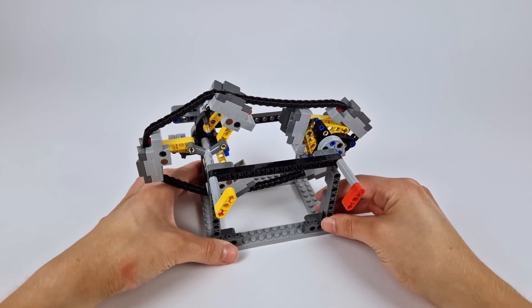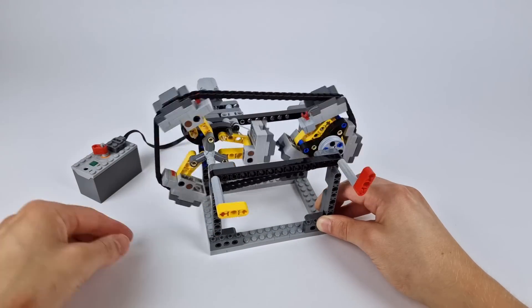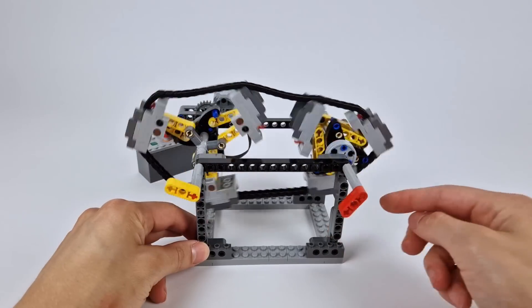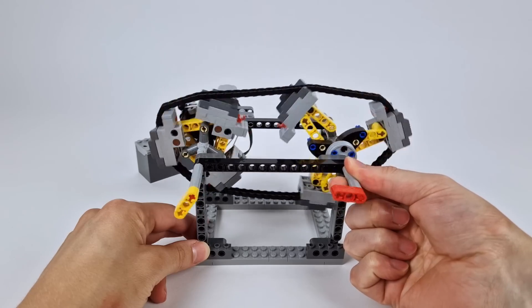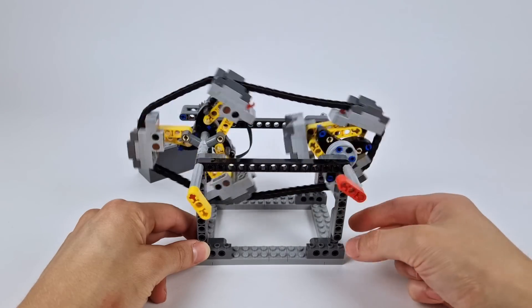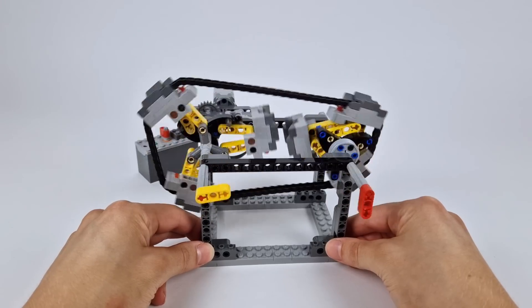In the last video, I built this pretty cool automatic continuously variable transmission. If I apply some resistance to the output axle, you can see that the two wheels automatically change size to reduce the gear ratio and give the output more torque at a lower speed.